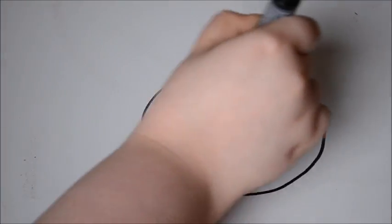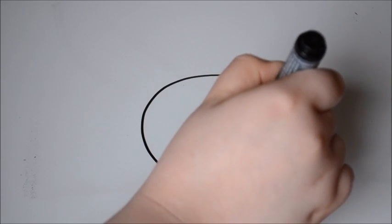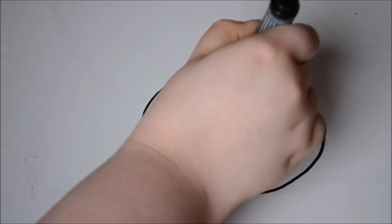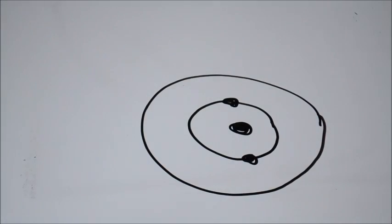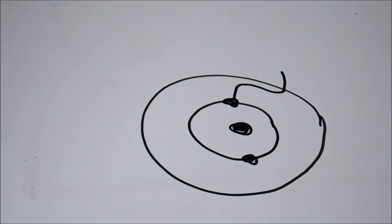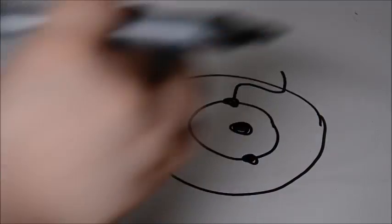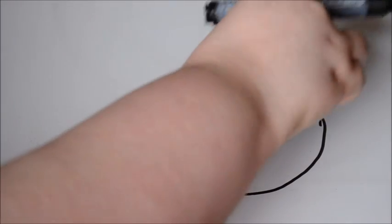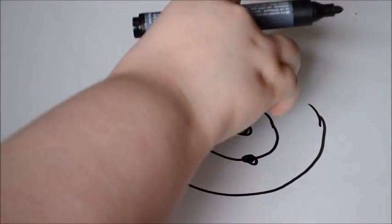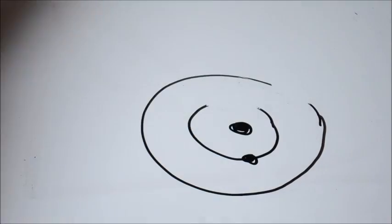This you should recognise as an atom. In the middle it's got its nucleus, and circling it, it's got its two electrons. When a beam of light, represented here by the squiggly line, hits the electron, it transfers its energy from the light to the electron.